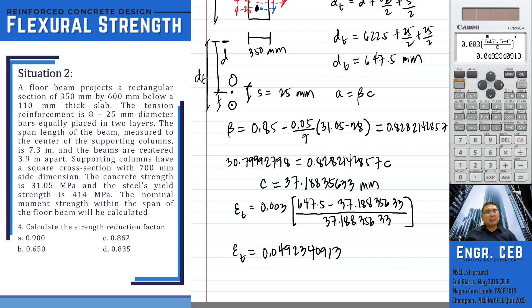Problem 4: Calculate the strength reduction factor. Since the net tensile strain is greater than 0.005, the resistance factor is 0.90, and that is letter A.